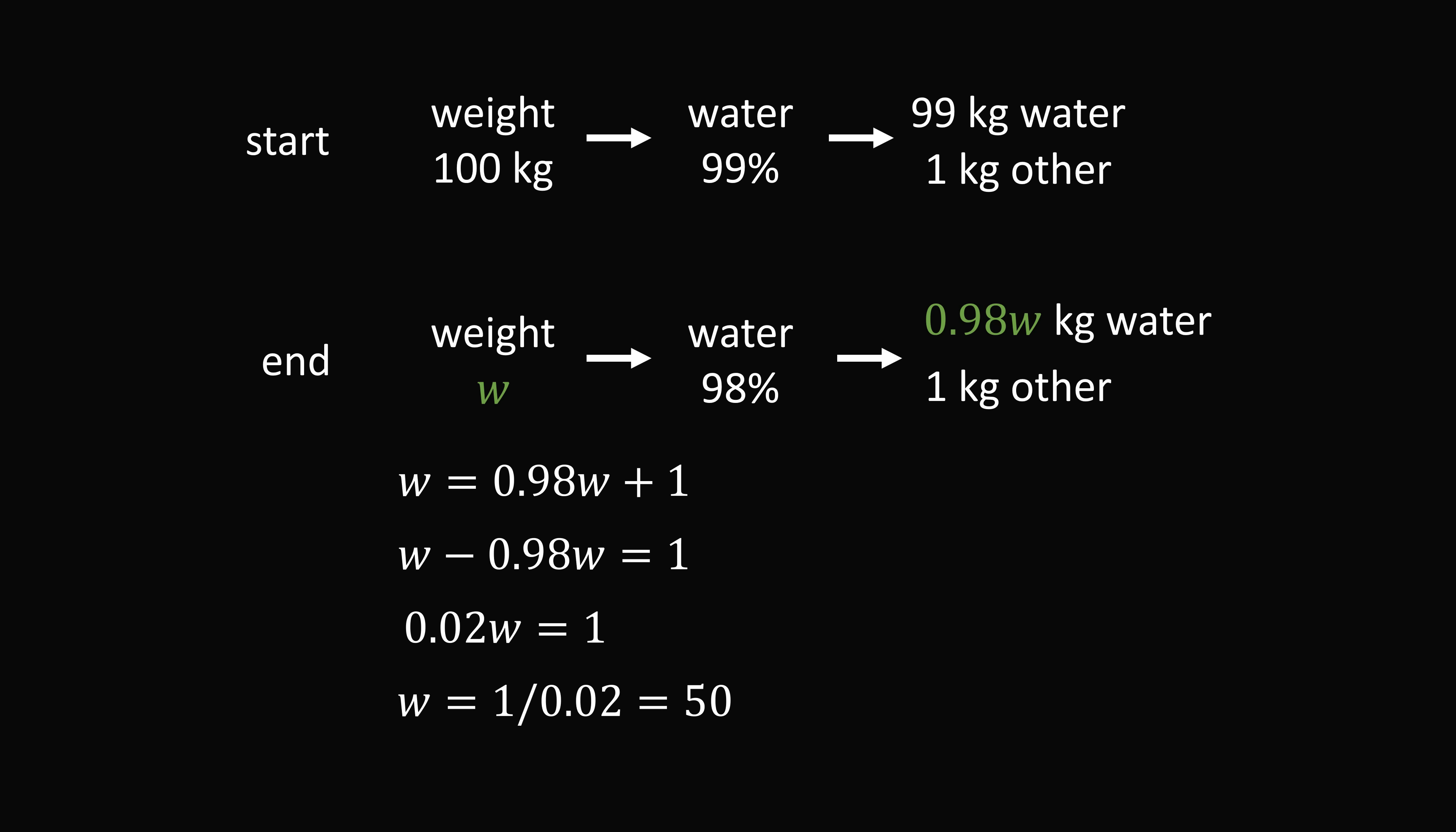So the initial weight has to be 50 kilograms. Let's just go through the calculation and make sure it works. If the ending weight is 50 kilograms, then 98% of that will be 49 kilograms. So that's how much water weight there is. We now have 49 plus 1 which equals 50 kilograms. And that exactly matches the 50 kilograms. Therefore 50 kilograms is the correct answer.